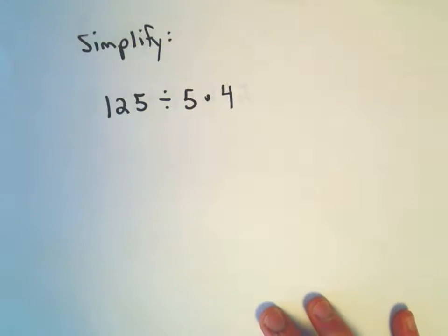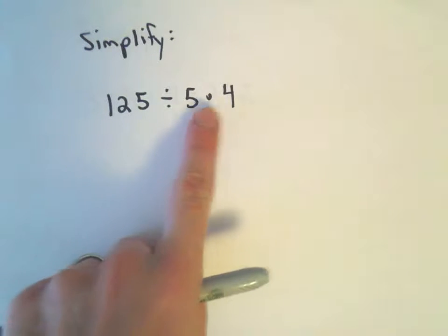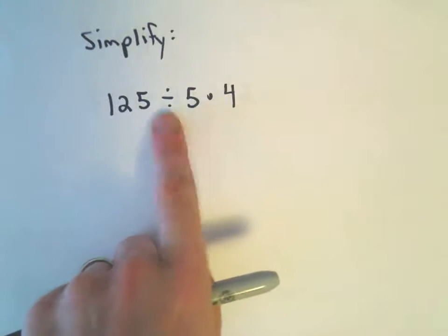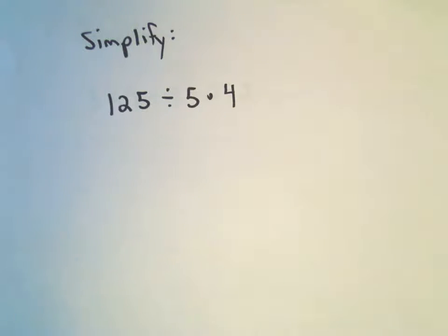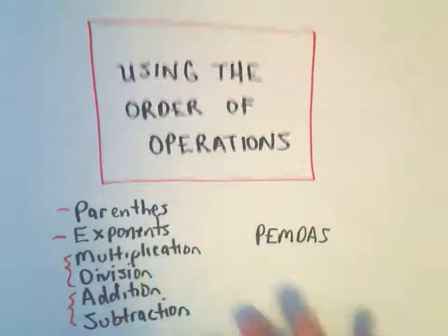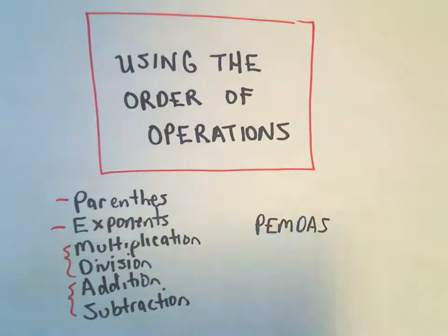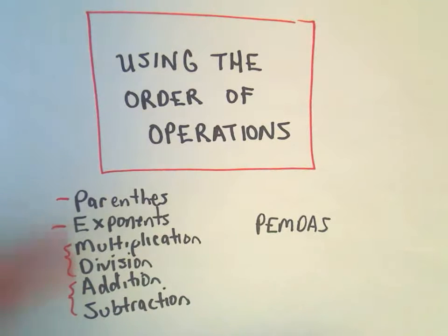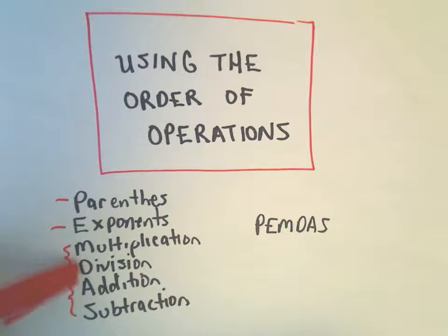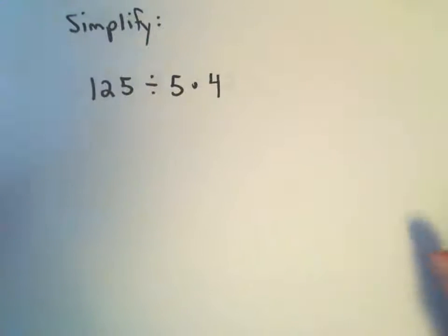Suppose we have 125 divided by 5 times 4. Now I see division and multiplication, and recall division and multiplication have equal priority. Yes, on my little piece of paper I think I had multiplication higher. That's just how my mnemonic worked out. But what you do is you do these left to right.